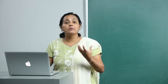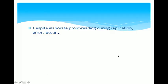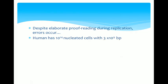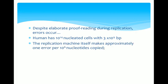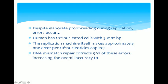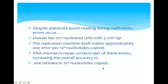Despite elaborate proofreading during replication, errors do occur. Humans have nearly 10^14 nucleated cells with 3×10^9 base pairs — the numbers are mind-boggling. The replication machine itself makes approximately one error per 10^6 nucleotides copied, and DNA mismatch repair corrects 99% of these errors, increasing overall accuracy to one mistake in 10^9 nucleotides copied.